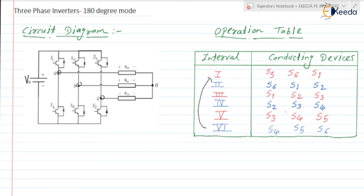Each switch conducts for 180 degrees because each interval is 60 degrees, so each switch must conduct for three intervals. For example, S1 is added in interval one, also present in interval two and interval three, but absent in intervals four, five, and six. So S1 conducts for 3 × 60 = 180 degrees. Similarly, S2 conducts through the second, third, and fourth intervals — again 180 degrees.